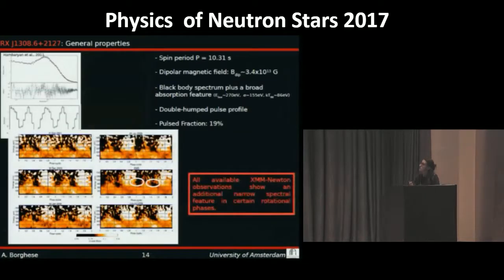J1308 is the only one among the Magnificent Seven that shows a double-peaked pulse profile. So we proceeded in the same way, building the energy versus phase image for all the XMM-Newton observations available, and we noticed that these observations show an additional feature in a certain rotational phase. First of all, we tested the significance of the line.